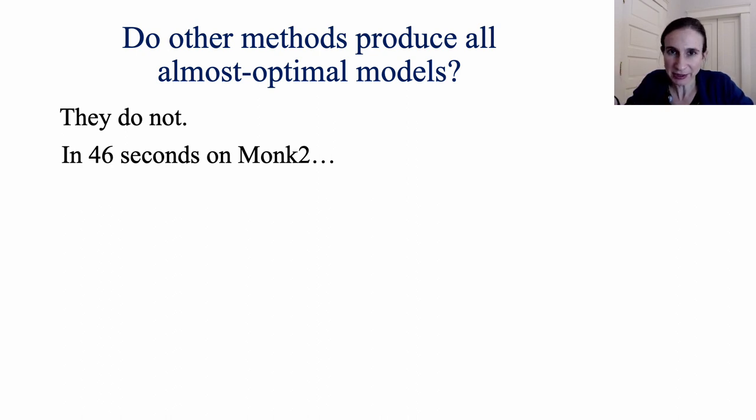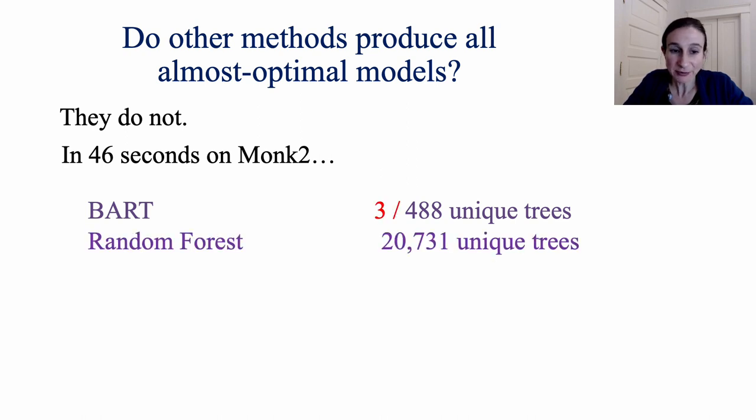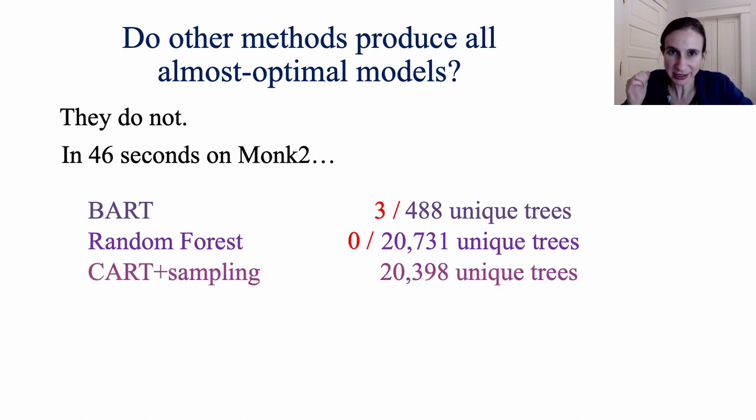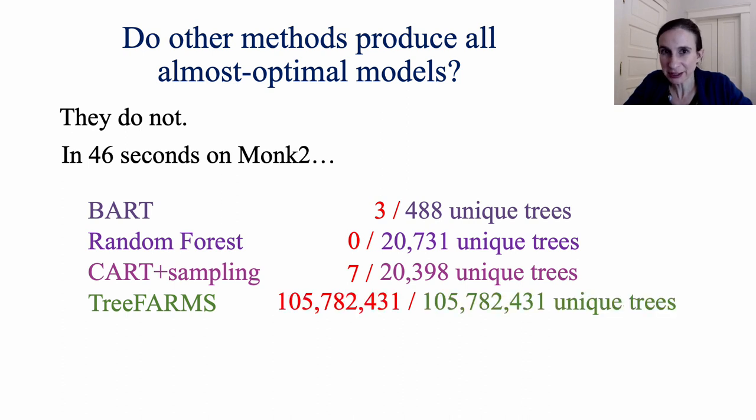So we tried running some sampling methods for 46 seconds. Now in 46 seconds, Bayesian additive regression trees created 488 unique trees. How many of them in the Rashomon set? Only three. Random forest created over 20,000 trees. None of them are in the Rashomon set. CART on random bootstrap samples of the data created over 20,000 trees. Only seven of them were in the Rashomon set. And we can compare that to TreeFARMS, which provably provides the whole Rashomon set. And it gives us over 105 million unique trees, all of which are in the Rashomon set. And we would have had no idea that the Rashomon set was quite that big if we didn't have TreeFARMS.